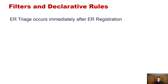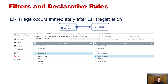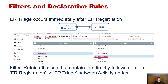Or: ER triage occurs immediately after ER registration. This is how we represented it before. In terms of filters, it's a simple path filter retaining all cases where there is a directly-follows relation from ER registration to ER sepsis triage. The full filter reads: retain all cases that contain the directly-follows relation ER registration → ER triage between activity nodes.